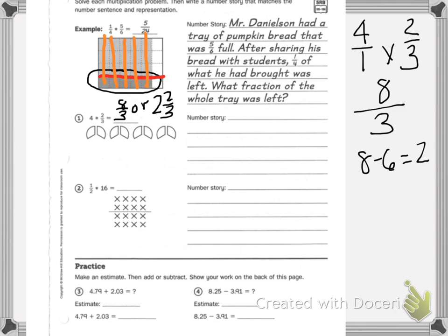Do I have 8 thirds? Counting: 1 third, 2 thirds, 3 thirds, 4 thirds, 5 thirds, 6 thirds, 7 thirds, 8 thirds. You can combine them together to get 2 wholes with 2 thirds left over.